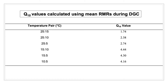Q10 is a coefficient which represents the rate of change in RMR pertaining to a 10 degree Celsius rise in temperature. Q10 values between the control treatment and the 15, 10, and 5 degrees Celsius treatments are observed to rise as temperature deviates further from average, or 25 degrees Celsius.